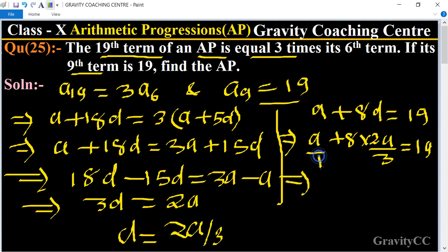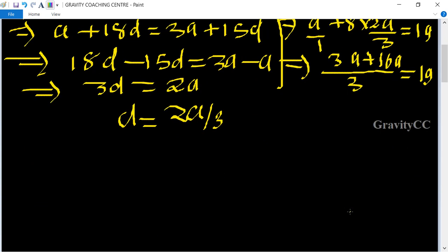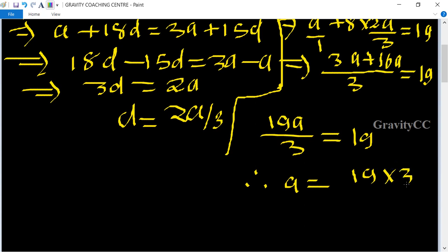This simplifies to 3a plus 16a equals 19 times 3, so 19a by 3 equals 19. Therefore a equals 19 multiplied by 3 divided by 19.